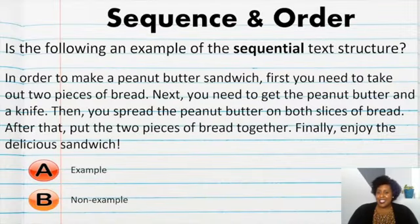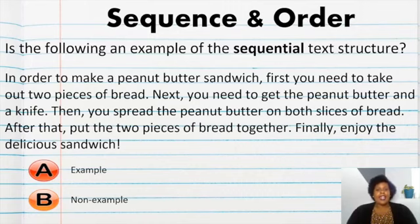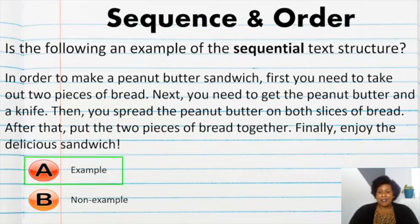Is the following an example of the sequential text structure? In order to make a peanut butter sandwich, first you need to take out two pieces of bread. Next, you need to get the peanut butter and a knife. Then, you spread the peanut butter on both slices of bread. After that, put the two pieces of bread together. Finally, enjoy the delicious sandwich. Is that an example or non-example? Great job! If you said an example, you're right, because the keywords are listing each specific step. The first passage didn't do that. It gave the general events that occurred when America was being founded, but it did not list it in sequential order.